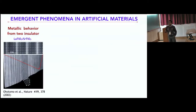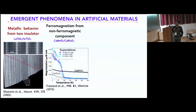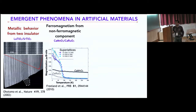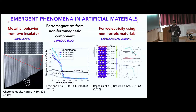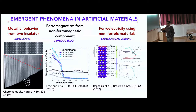A couple of well-known examples: forming an interface between band insulator strontium titanate and Mott insulator lanthanum titanate makes the interface highly metallic. Another example is getting ferromagnetism out of non-ferroic systems — calcium manganite is an antiferromagnet and calcium ruthenate is a paramagnet, but when you form a heterostructure it behaves like a ferromagnet. Similarly, you can get ferroelectricity from non-ferroic components like lanthanum manganite, strontium manganite, and neodymium manganite — none are individually ferroelectric, but the heterostructure shows ferroelectricity.